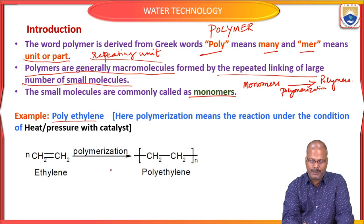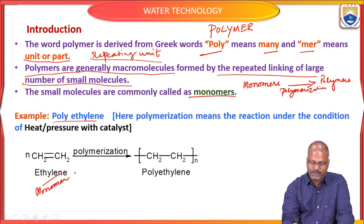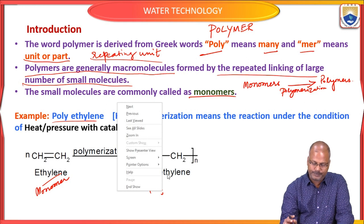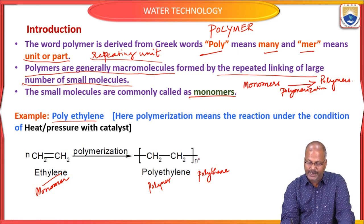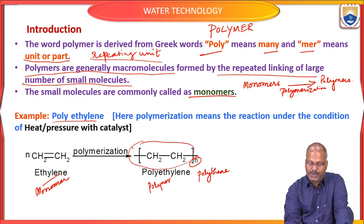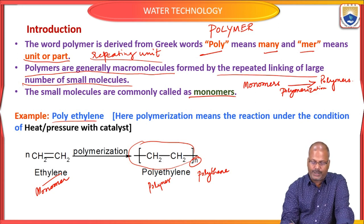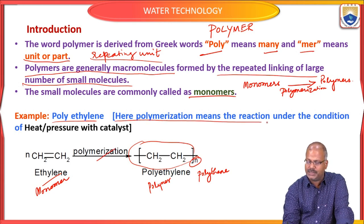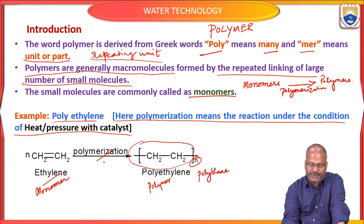Example: polyethylene. Ethylene is the monomer unit. When we put N here, that means this part is repeated N times — N can be 100, 500, 1000, and so on. Polymerization occurs under the condition of heat and/or pressure with a catalyst.